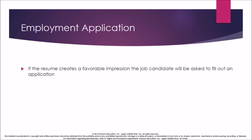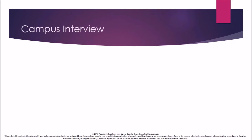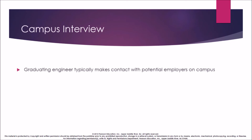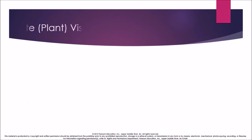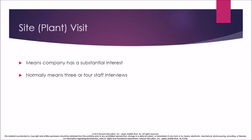Employment application: if the resume creates a favorable impression, the job candidate will be asked to fill out an application. This may be redundant with the resume but will usually lead to an interview. Campus interview: a graduating engineer typically makes contact with potential employers on campus. A successful campus interview means the applicant learns about employment opportunities and the interviewer learns enough about the applicant. A site or plant visit means the company has a substantial interest, normally involving three or four staff interviews and a tour of the area where the candidate will work.